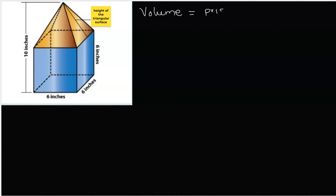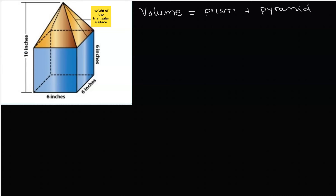For the volume, we would say that would be the volume of the rectangular prism plus the volume of the pyramid. Now, the volume of a rectangular prism — it's a straight-up solid — so we just say it is the area of the base shape multiplied by how tall, which would be six inches.